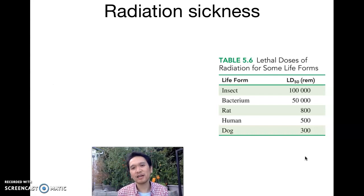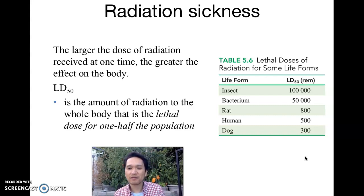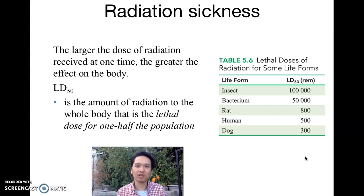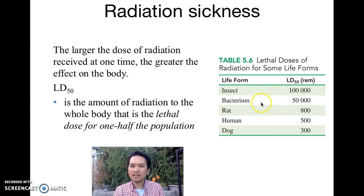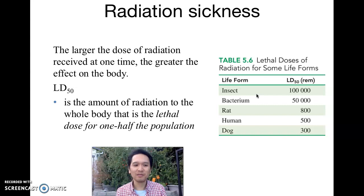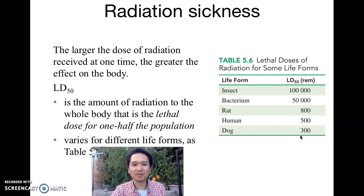Another chart shows how much radiation dosage can cause sickness. The larger the dose of radiation received at one time, the greater the effect on the body. There's a figure called the LD50 — the lethal dose for 50% of the population. For example, if 100 insects each received 100,000 REM, about 50 of them would die. Insects can actually outlive other animals when poisoned by radioactivity. Rats need 800 REM, humans 500, and dogs are more sensitive at 300 — something to research.